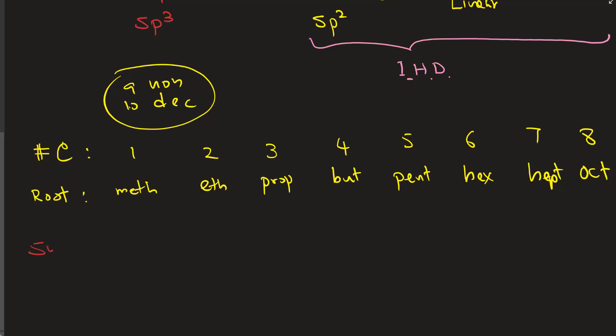Now, when this is on the main chain and the root name, but if it is a substituent, you're just going to add a yl. Methyl, ethyl, propyl, butyl, and so on. So you write it like methyl dash, ethyl dash, propyl dash, butyl dash, you can go on. But just remember, it's an alkyl.